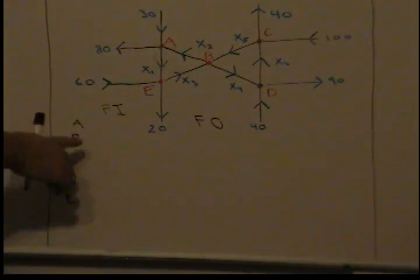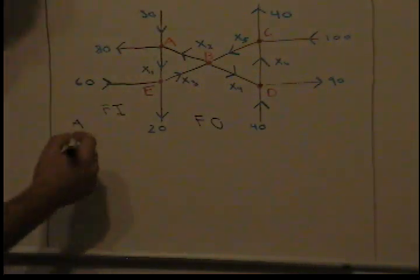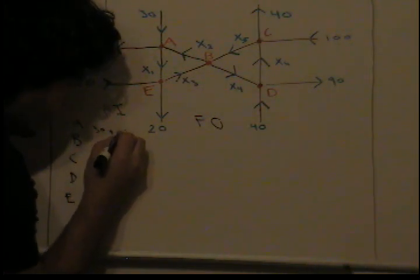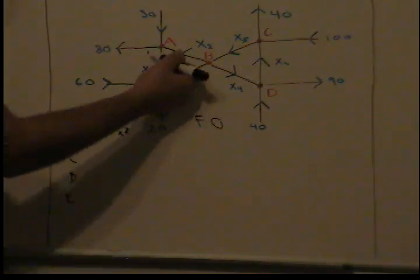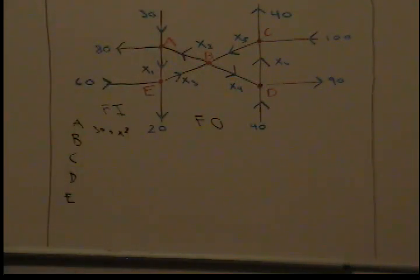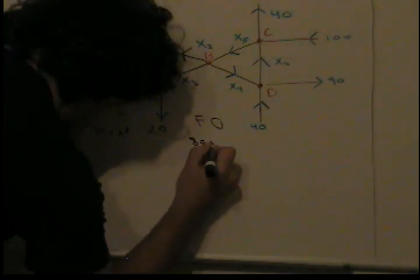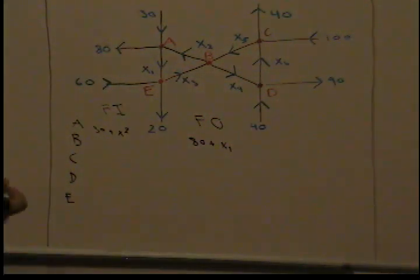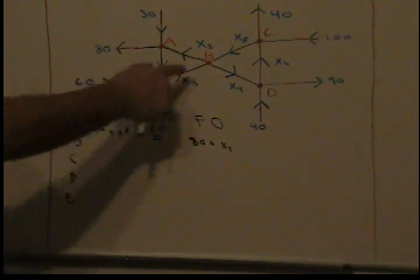Let's start with node A. 30 flows into node A and x2 flows into node A, so we say 30 plus x2. What flows out of node A? 80 flows out and x1 flows out, so we say 80 plus x1 equals the inflow.